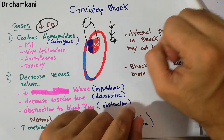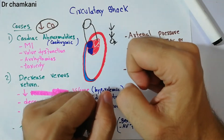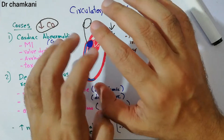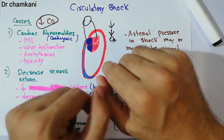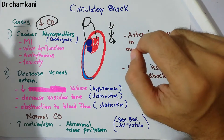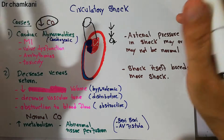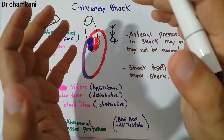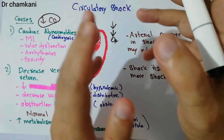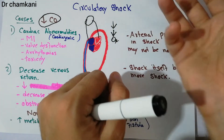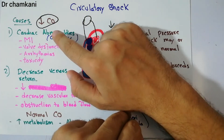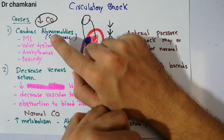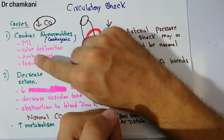Another cause is abnormal pumping — arrhythmias — where the heart can pump but not in a rhythm; it pumps for a while then stops. Arrhythmias most often occur due to myocardial infarction damaging the conduction system. So the common causes of cardiogenic shock are myocardial infarction, valve dysfunction — such as stenosis and regurgitation — arrhythmias affecting the conduction system, and toxicity from drugs like digoxin that decrease heart pumping.